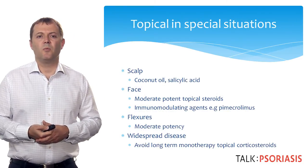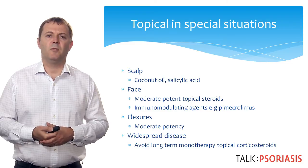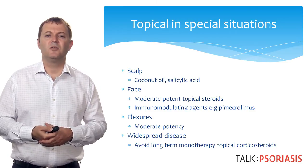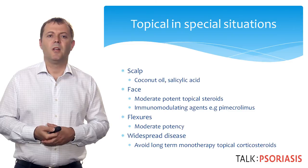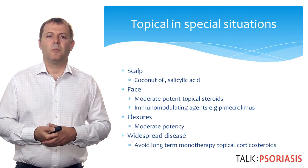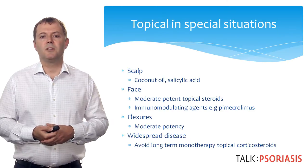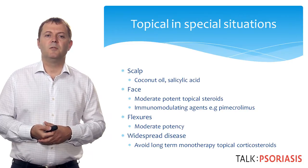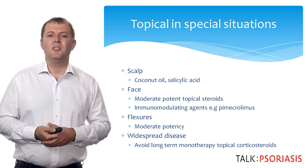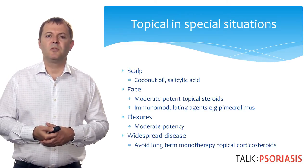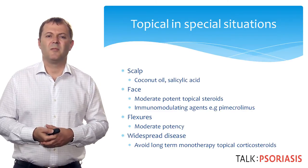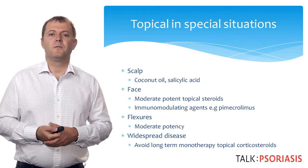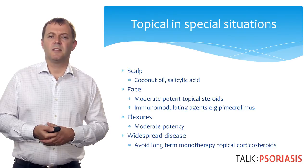Certain situations call for particular types of topical treatment. For the scalp, coconut oil and salicylic acid combinations are very useful in removing scale. For the face, mainly moderate potent topical corticosteroids are used, but immunomodulating agents such as pimecrolimus may also be useful. Flexural psoriasis responds well to moderate potency topical corticosteroids in short bursts and can also be used with topical antifungal treatments. It's important to remember that in widespread plaque disease, long-term monotherapy of topical corticosteroids should be avoided due to significant side effects.